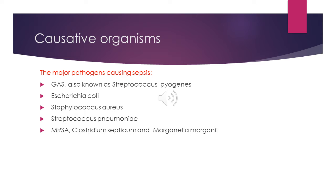The major pathogens causing sepsis include group A streptococcus (also known as Streptococcus pyogenes), Escherichia coli, Staphylococcus aureus, Streptococcus pneumoniae, MRSA, Clostridium septicum, and Morganella morganii. These are the organisms that can cause sepsis in pregnancy and postpartum.